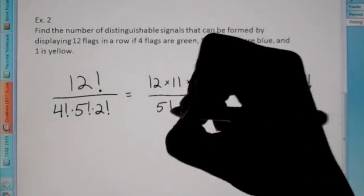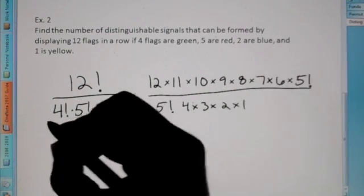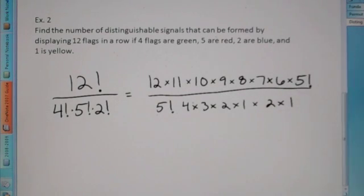We have our five factorial, but then we have 4 × 3 × 2 × 1 for our four factorial, and then we have our two factorial as well on bottom. Okay?